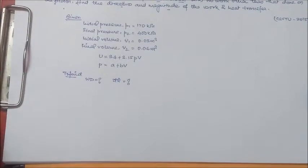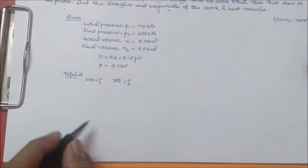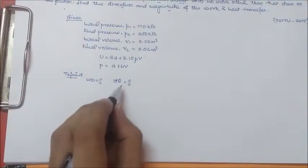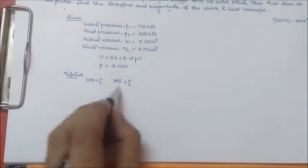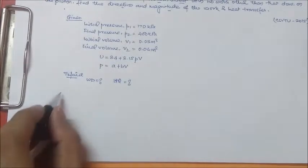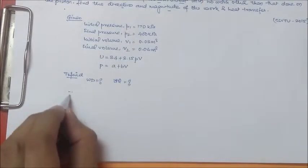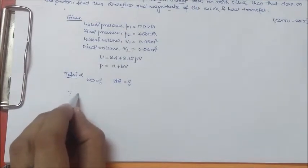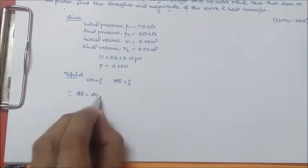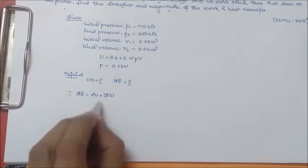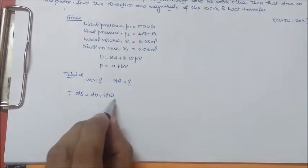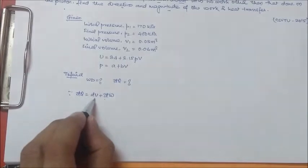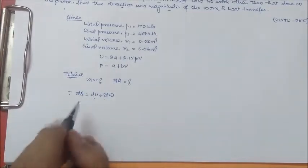Now see, work done is required and these things are required so what we have from first law of thermodynamics is that dQ is equal to du plus dW, means we have to find out dW first and du.